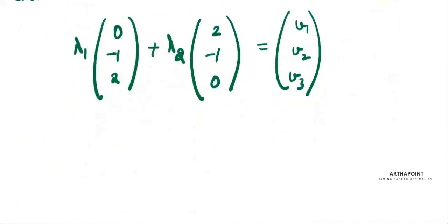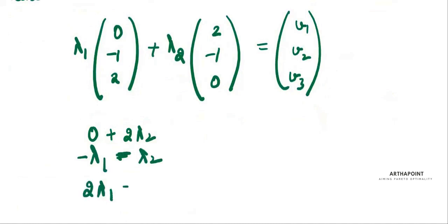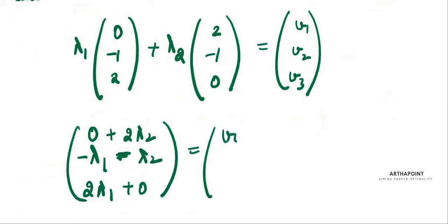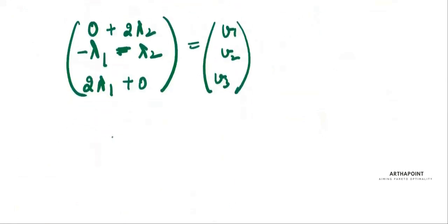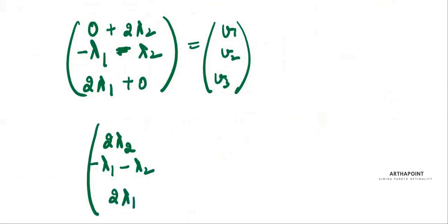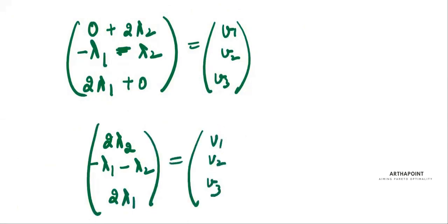Expanding this, I get: 0 + 2λ₂ for the first component, -λ₁ - λ₂ for the second, and 2λ₁ + 0 for the third. So the system of equations is: 2λ₂ = v1, -λ₁ - λ₂ = v2, and 2λ₁ = v3.